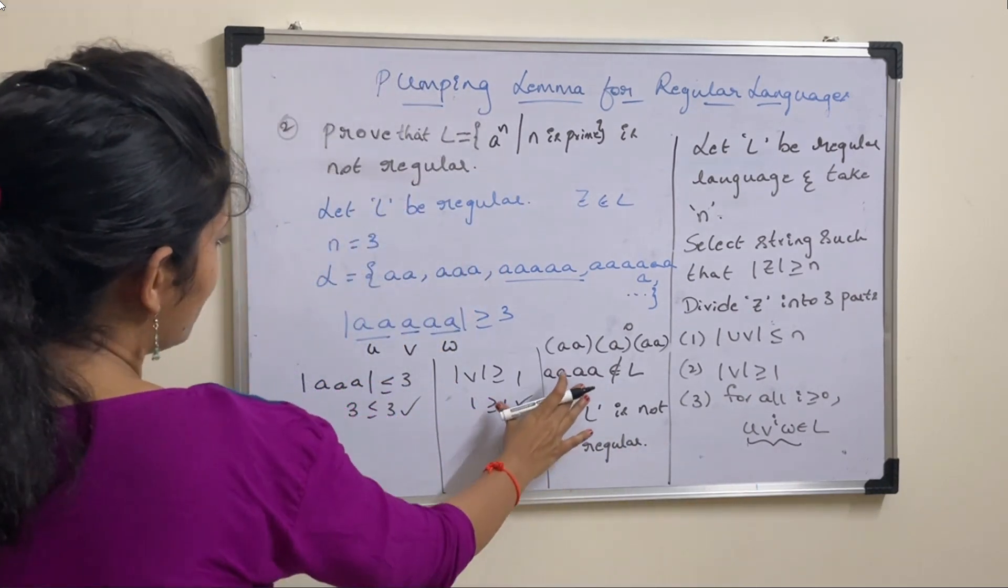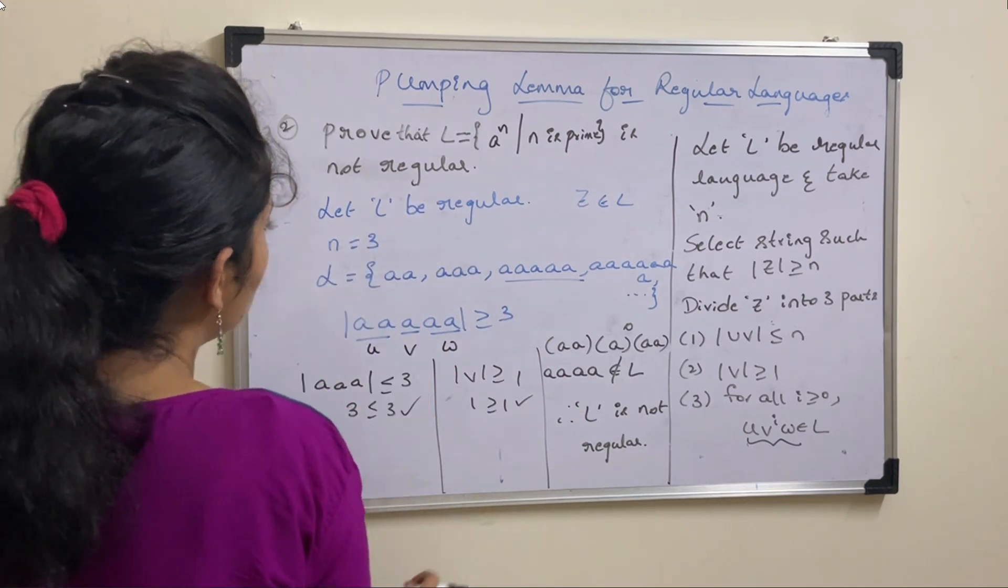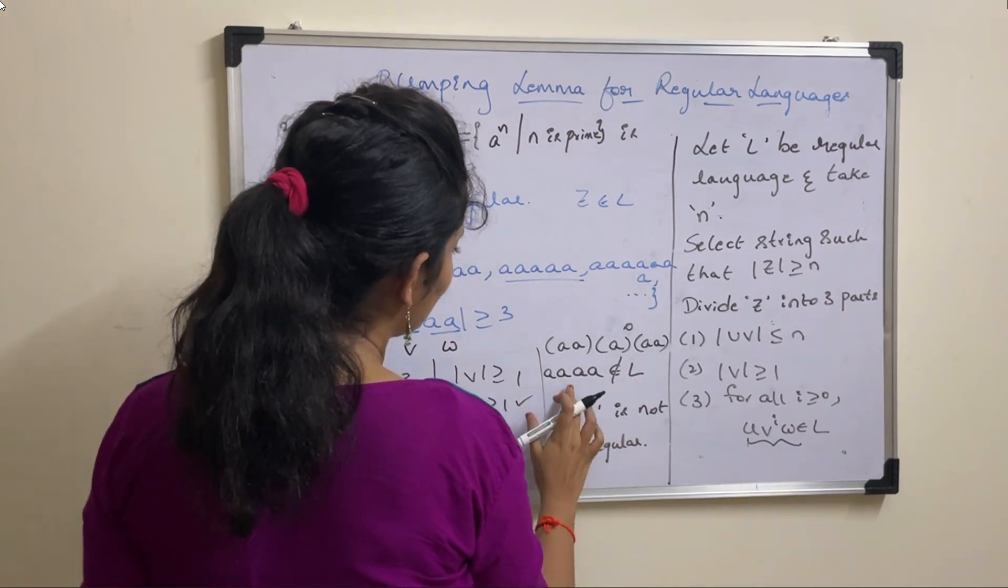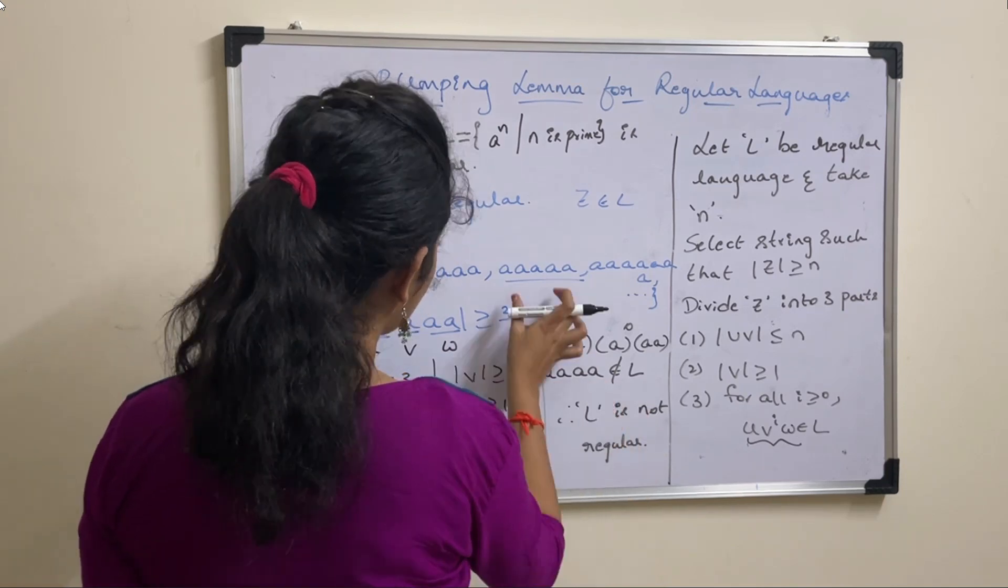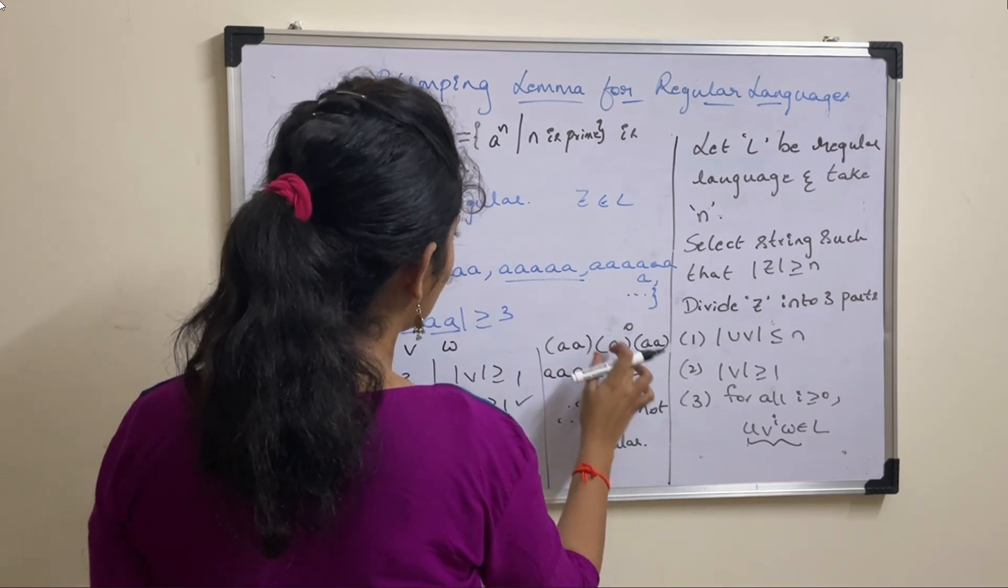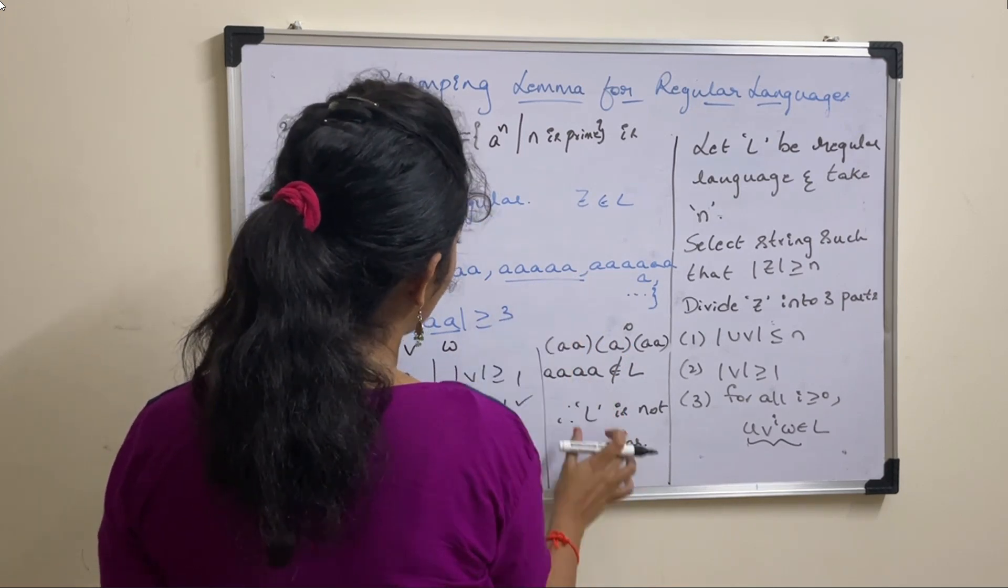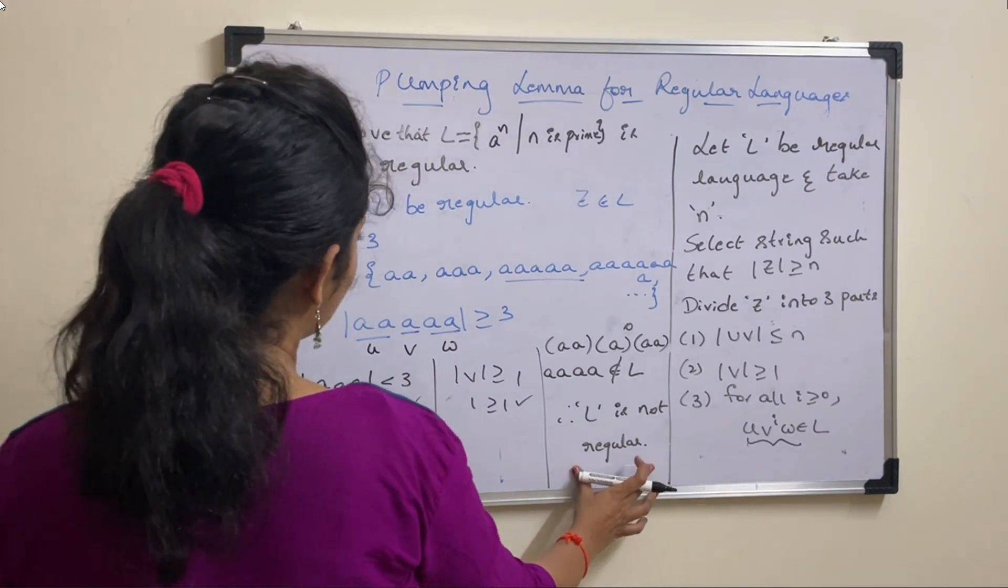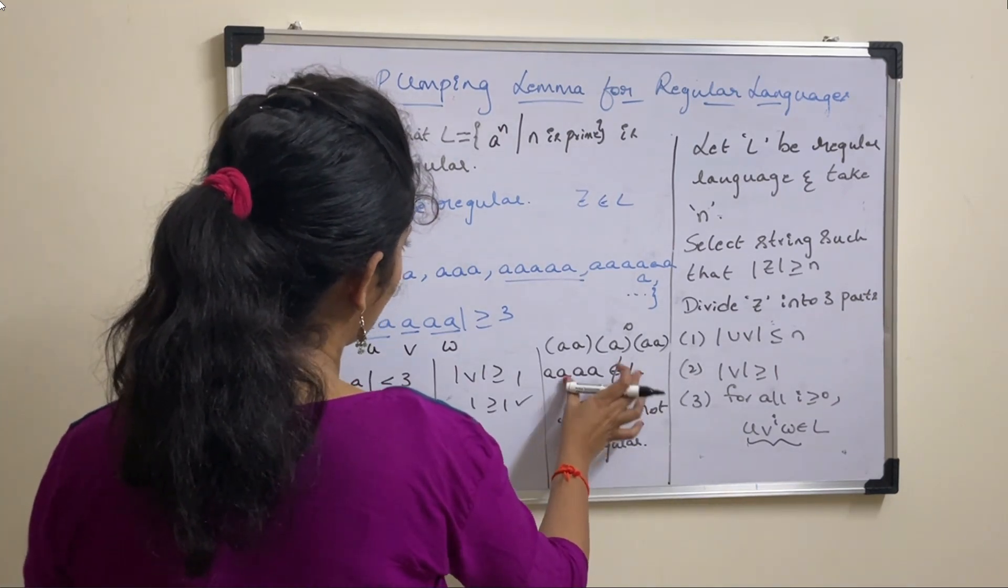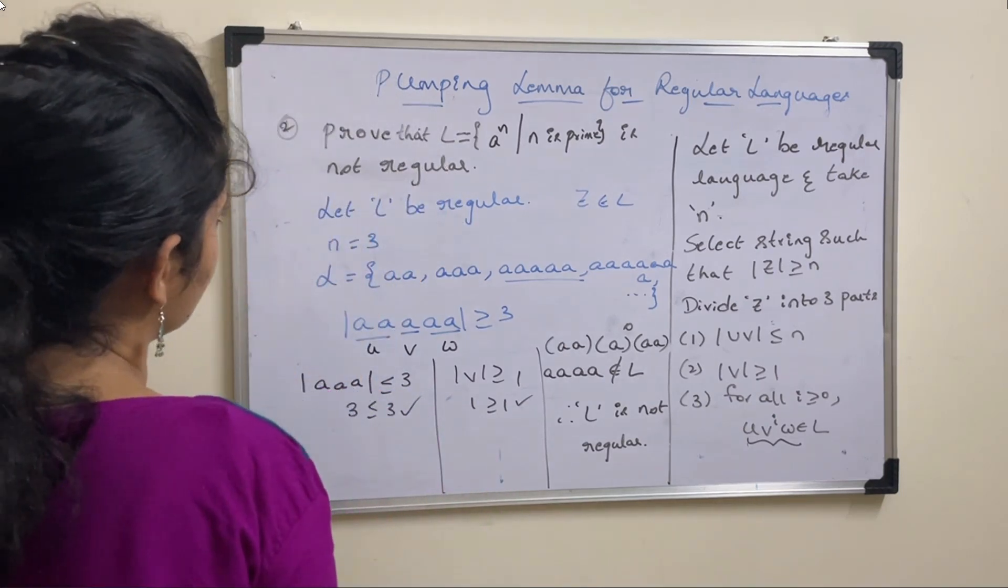In every case we are proving contradiction only. Initially we are assuming L is regular, and after that we are showing that this is not regular based on the string. If string does not belong to language, then that is not regular. As we prove contradiction here, string does not belong to L, we can say that language L is not a regular language.